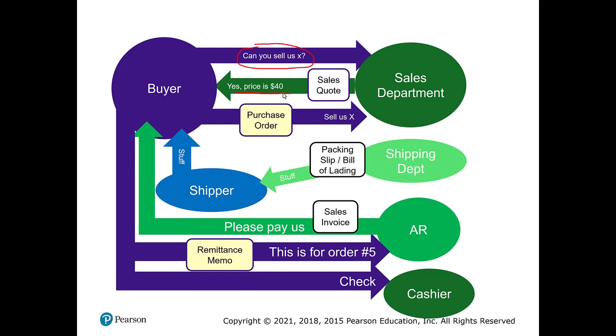Next, our sales department says yes, we can, and we'll sell it to you for a certain price. Prices vary a lot — we might give volume discounts, and it varies by industry. At Starbucks everything is standardized, but you could be a supplier for Boeing where that customer relationship is very different. The key artifact we generate at this point is called the sales quote — a formal document we keep to reconcile later on.